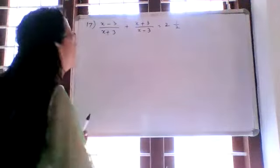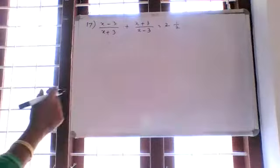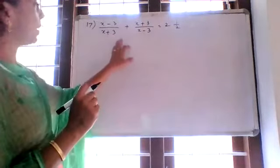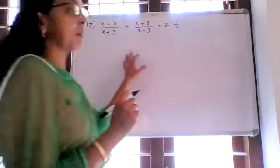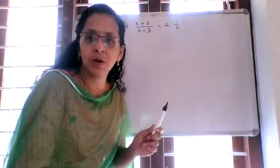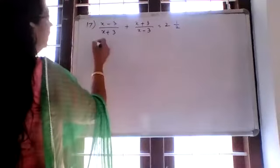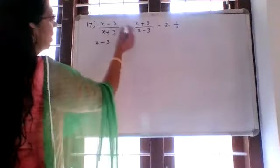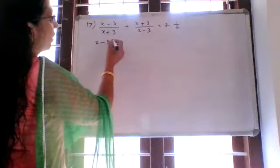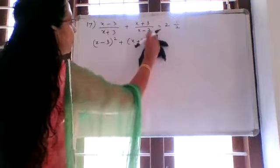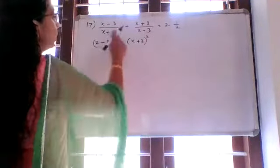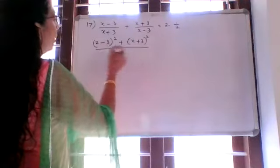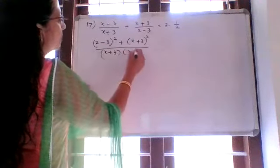Question 17: x minus 3 divided by x plus 3, plus x plus 3 divided by x minus 3, is equal to 2 and 1 by 2. Using cross multiplication, x minus 3 times x minus 3 gives x minus 3 whole square, plus x minus 3 into x plus 3, plus x plus 3 whole square, divided by x plus 3 into x minus 3.